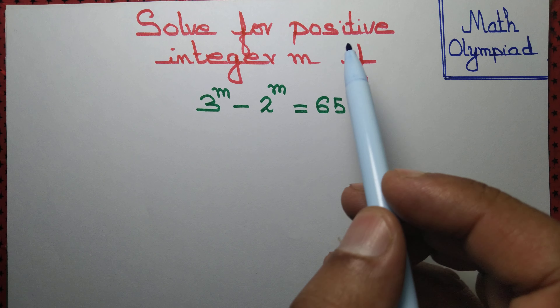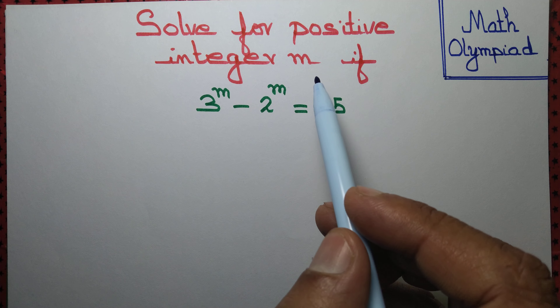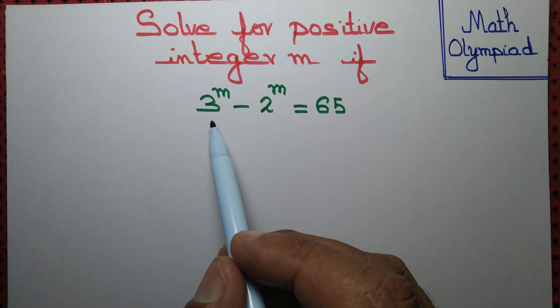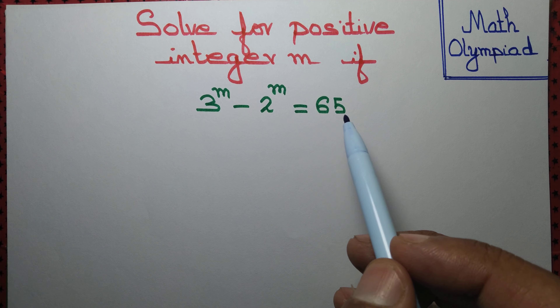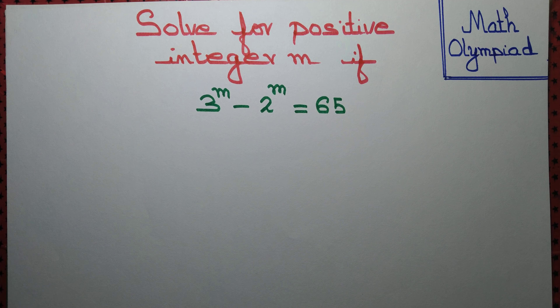Let us determine all the positive integer m such that 3 to the power m minus 2 to the power m equal to 65.